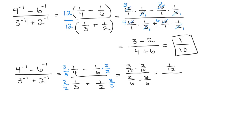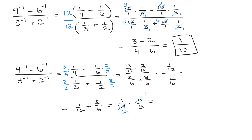That gives me one-twelfth over five-sixths. Now I have a single fraction over a single fraction — that's when Method 1 is easiest. You take one-twelfth divided by five-sixths, which is the same as one-twelfth times six-fifths. Then we reduce, and notice you get the same answer: one-tenth.